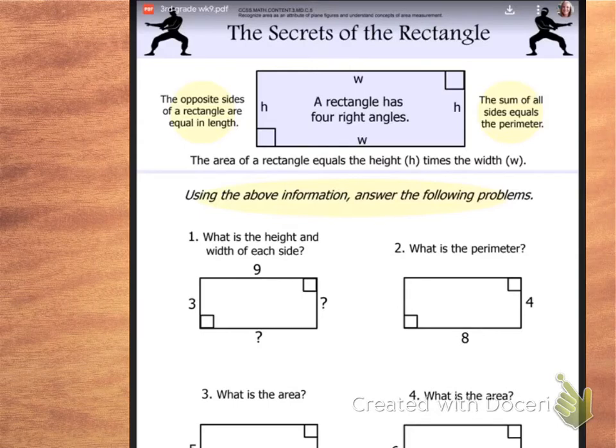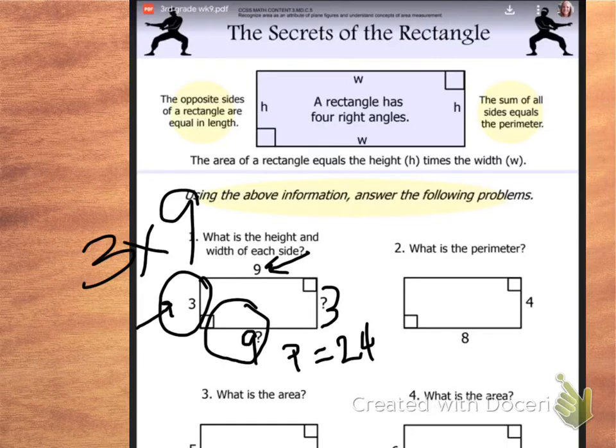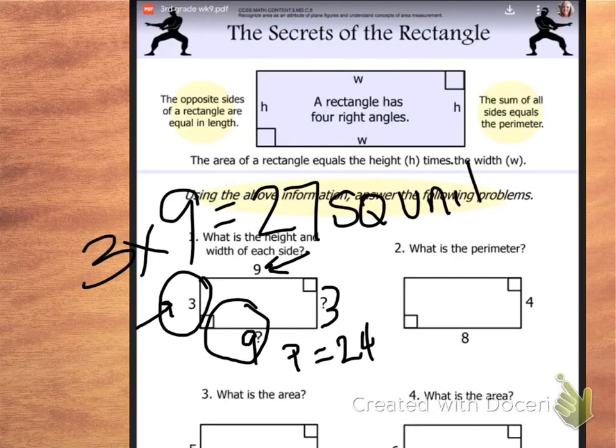So it says what is the height and width of each side for number one. So what we learned was the opposite sides of our rectangles are equal in length. So now if this side is 9, that's going to make this side 9. And if this side is 3, that's going to make this side 3. All right, so now I can add all of the sides together to find the perimeter, which is the distance around. So 3 plus 3 is 6, right? 9 plus 9 is 18. 18, 19, 20, 21, 22, 23, 24. So the perimeter for this equals 24 units around. But if I wanted to know the area, which is square units to fill the inside, I would take one of these sides times this side. So it would be 3 times 9. And that's going to be 3 times 9 is 27. So 27 square units is the area.